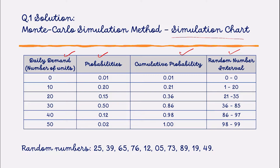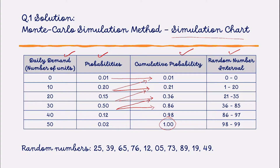The third column is cumulative probability and the fourth one is the random number interval. To find cumulative probability, first write down the first probability as it is, then add the remaining probabilities sequentially: 0.01 plus 0.20 gives 0.21; 0.21 plus 0.15 gives 0.36; 0.36 plus 0.50 gives 0.86, and so on. Always remember that at the end of the cumulative probability column, the total will always be 1, since the total of all probabilities is always 1.